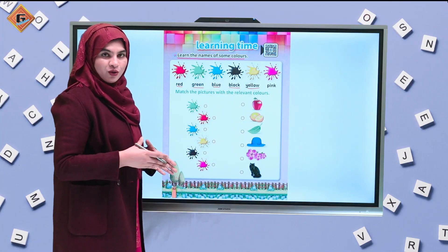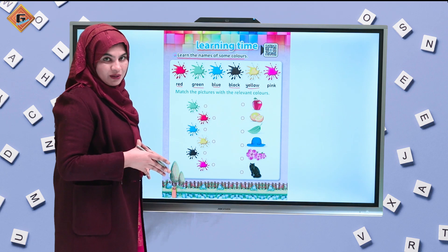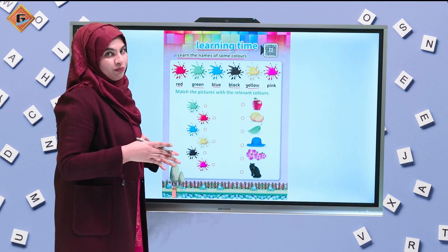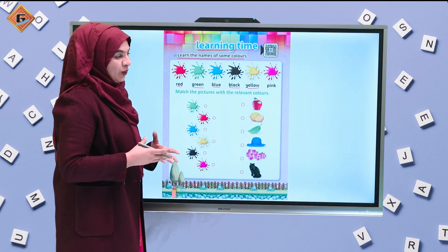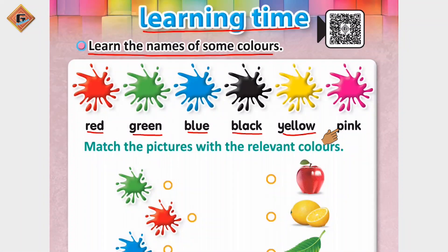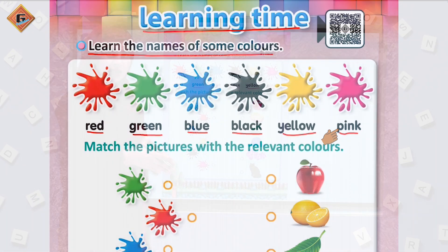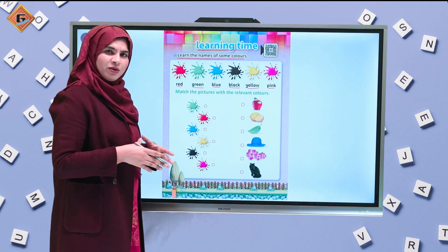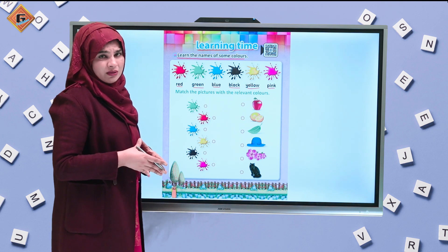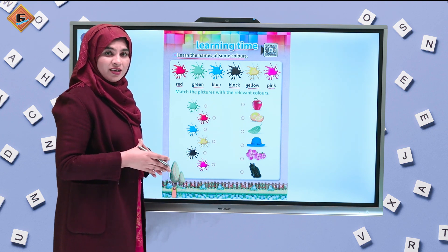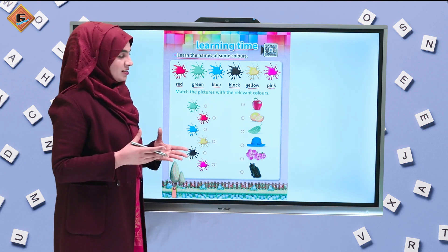Next is yellow. Yellow color me hum fruits bhi khate hai — like a yellow banana and yellow mango. And the last one is pink. Pink color me hume bahut saari cheeze hain — pink flowers are there and other things as well.